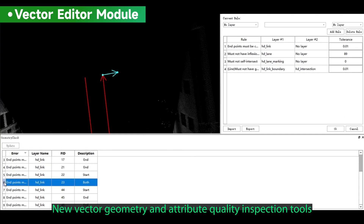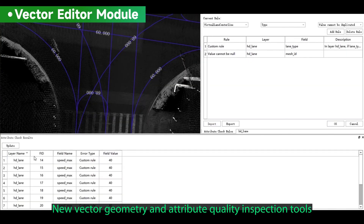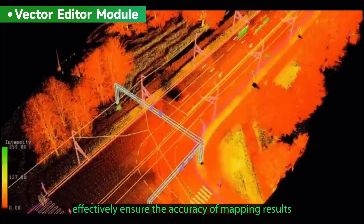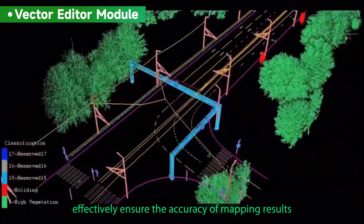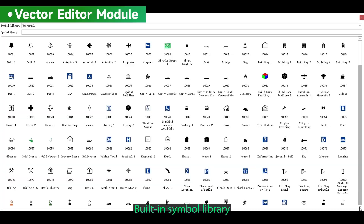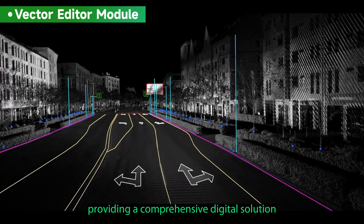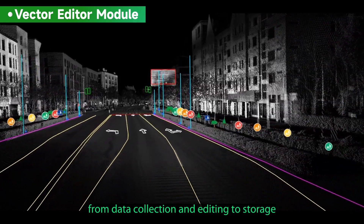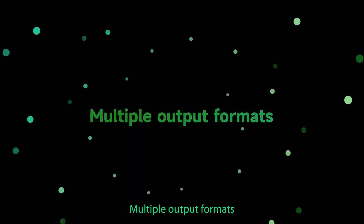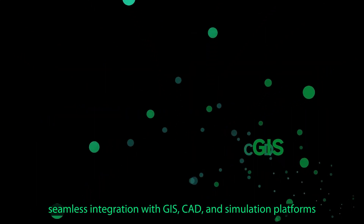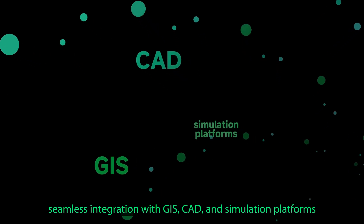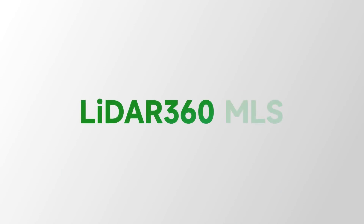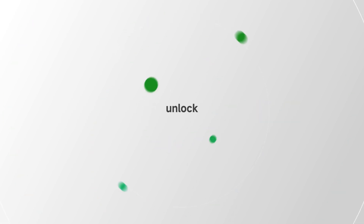New vector geometry and attribute quality inspection tools effectively ensure the accuracy of mapping results. A built-in symbol library provides a comprehensive digital solution from data collection and editing to storage, with multiple output formats enabling seamless integration with GIS, CAD, and simulation platforms. LiDAR 360 MLS — unlock a new experience in the digital physical world.